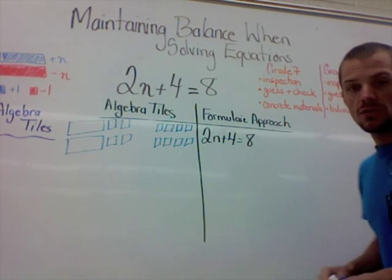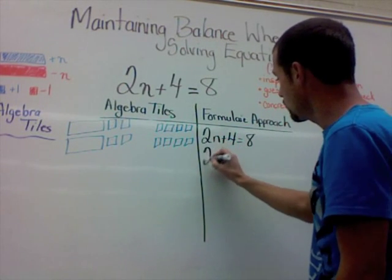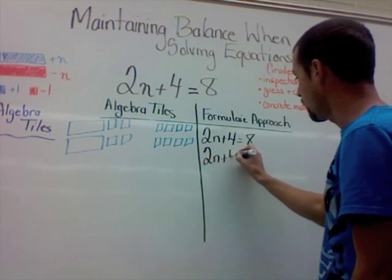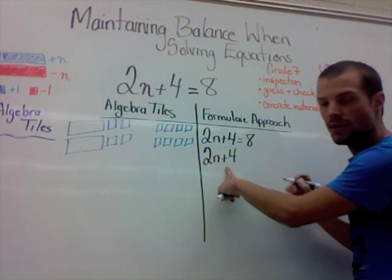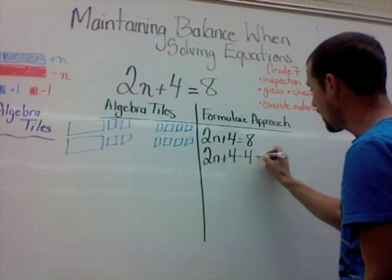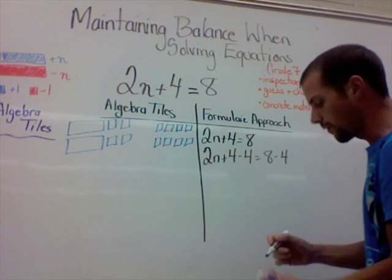In the formula, the way we would do that is we would go 2n plus 4. Because it's a positive 4 in the formula, we would take 4 away. And because we did it to one side, we would do it to the other.